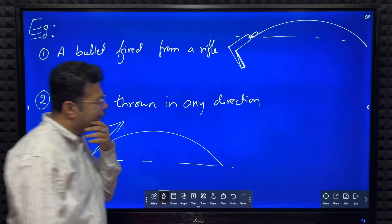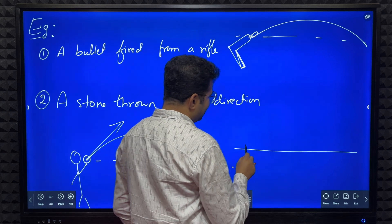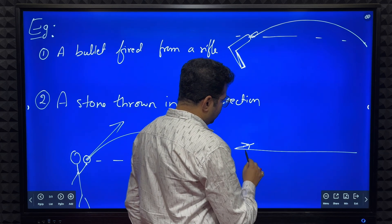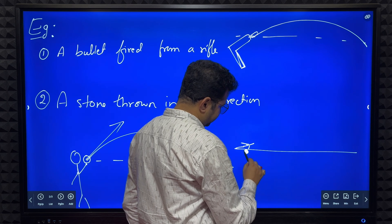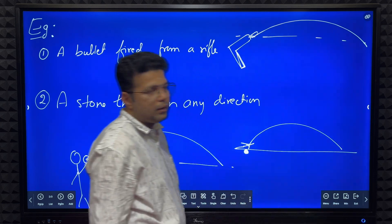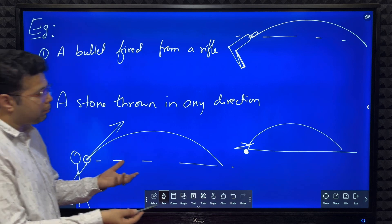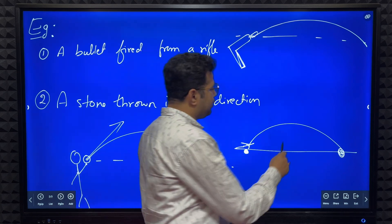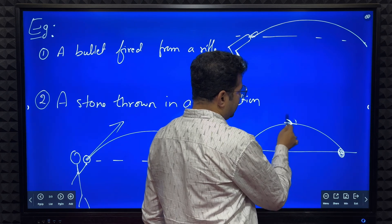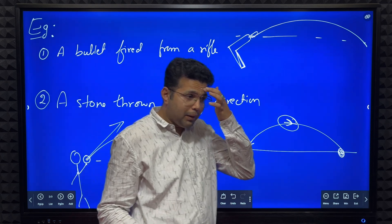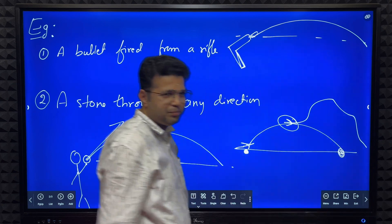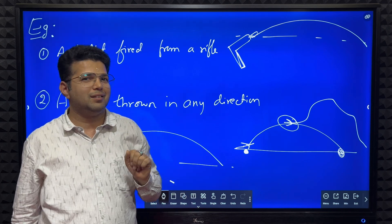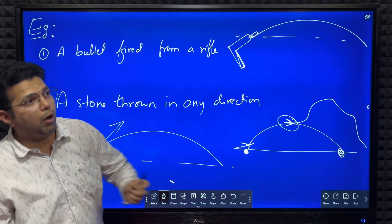Now, let me give one more example. Consider an aeroplane going from one airport to another. Is it a projectile? No, it is not, because when the aeroplane reaches the maximum point, if the pilot comes to know there is some danger, he can change the destination. The aeroplane is also controlled by its engine, so using the engine's power you can change the direction — therefore it is not projectile motion.